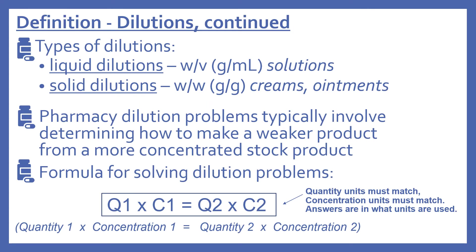There are a couple different types of dilutions. There are liquid dilutions — these are weight per volume, usually in the units of grams per milliliter, and these are solutions. Solid dilutions are weight per weight, generally in grams per gram, and this includes creams and ointments. Pharmacy dilution problems typically involve determining how to make a weaker product from a more concentrated stock product.